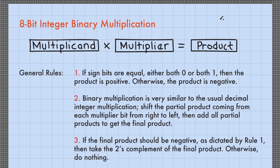As for the general rules in multiplying 8-bit integer binary numbers: Rule 1, if sign bits are equal — either both 0 or both 1 — then the product is positive; otherwise, the product is negative. Rule 2, binary multiplication is very similar to usual decimal integer multiplication — shift the partial product from each multiplier bit from right to left, then add all partial products to get the final product. Rule 3, if the final product should be negative as dictated by Rule 1, then take the 2's complement of the final product; otherwise, do nothing.